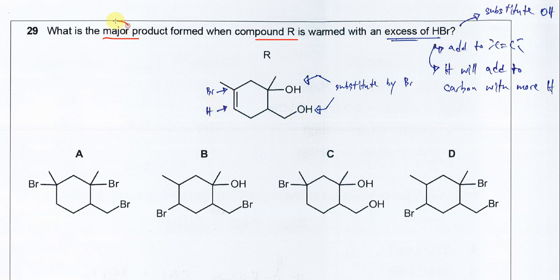Whenever they ask the major product and HBr is added or HCl is added, whenever it's the hydrogen halide addition, the hydrogen in the hydrogen halide must come to the carbon with more hydrogen.